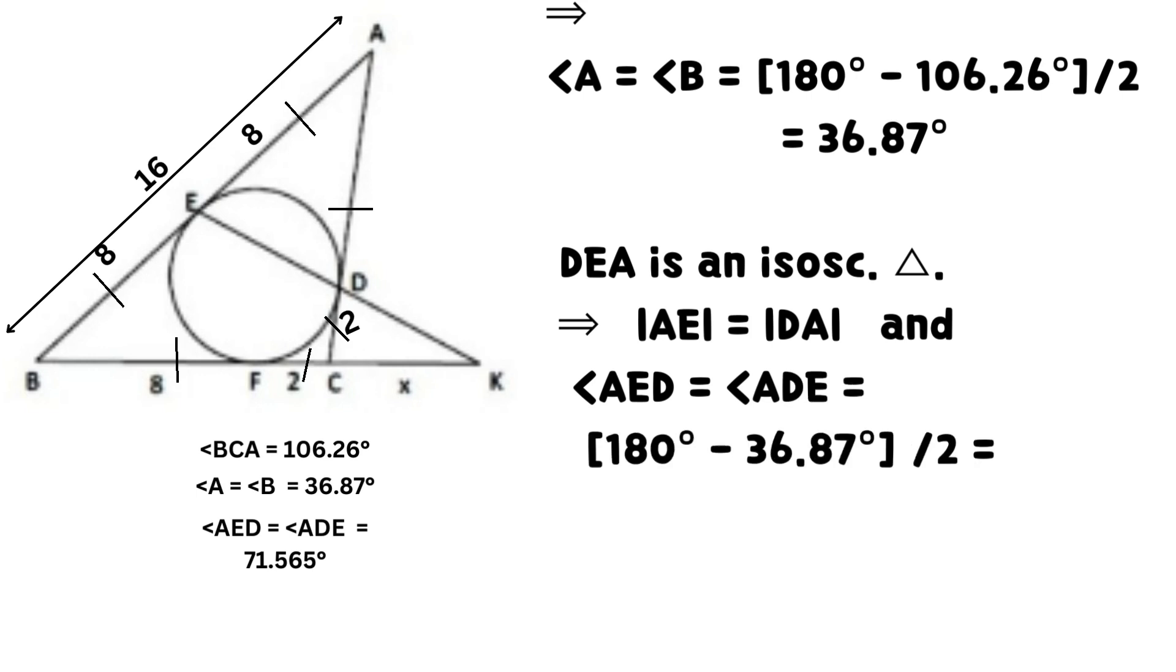DEA is an isosceles triangle. Thus AE equals DA and angle AED equals angle ADE which equals 71.565 degrees after substitution and simplification of values. It is because the base angles of an isosceles triangle are equal.